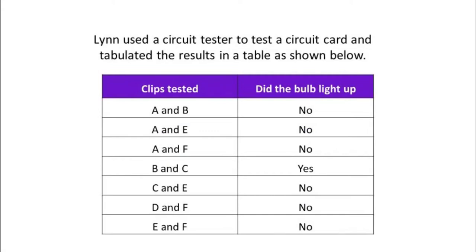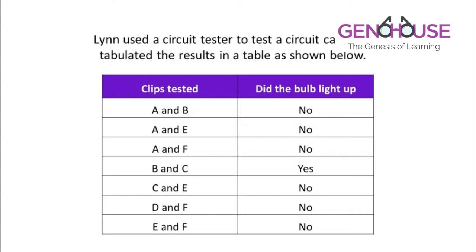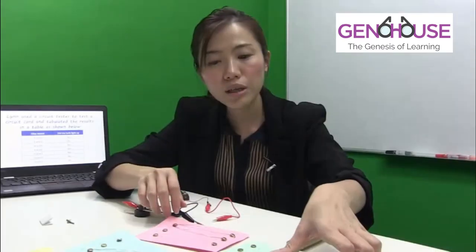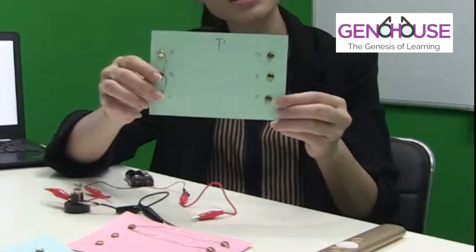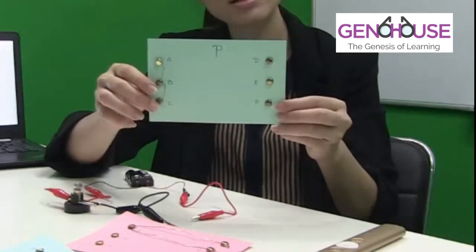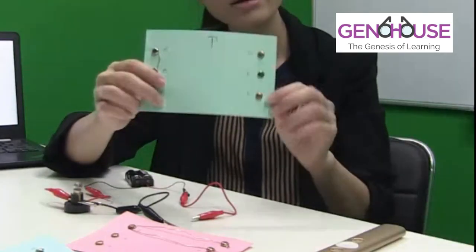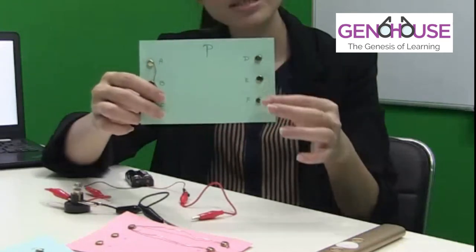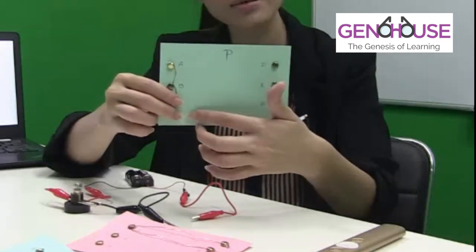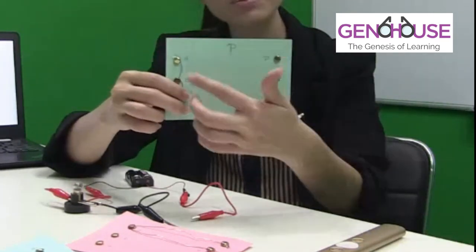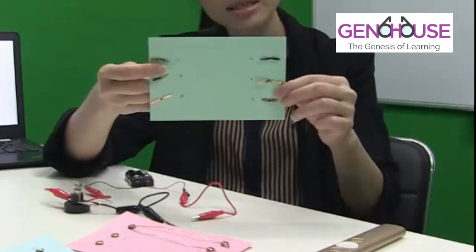Now let's look at a question that is commonly asked. Lynn used a circuit tester to test a circuit card and tabulated the results in a table. Let me quickly show you what a circuit card looks like — this is a simple circuit card I made myself using fasteners, which are electrical conductors, at different points.